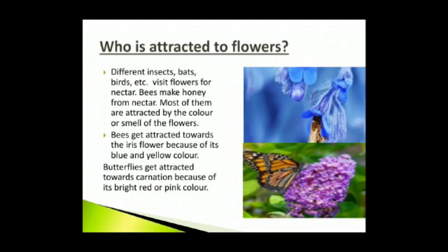Who is attracted to flowers? Different insects, bats, birds, etc. visit flowers for nectar. Bees make honey from nectar. Nectar is a sweet liquid that is found inside a flower. Most of them are attracted by the color or smell of the flowers. Bees get attracted towards the iris flower because of its blue and yellow color. Butterflies get attracted towards carnation because of its bright red or pink color. Flies get attracted towards the rafflesia flower because of its odor — it smells like rotten meat. Rafflesia is the largest flower in the world.